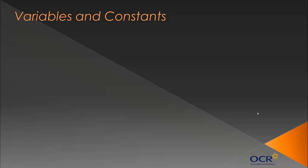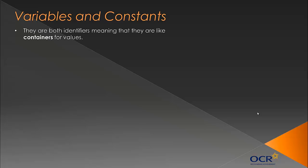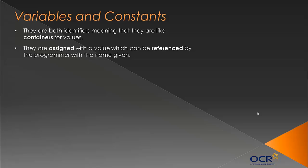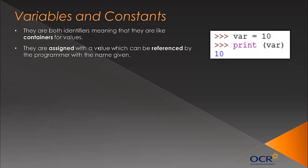First of all let's have a look at variables and constants. One of the first things you've done when you code is using variables - they're really key in computer science. They really are the foundation of coding. From a theory point of view, the technical term is they're both identifiers, meaning they're like containers for values. They're called identifiers mainly because they're assigned with values which can be referenced by the programmer with the name given.